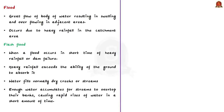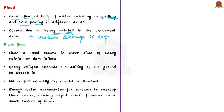A flood refers to a great flow of water which results in swelling and overflowing in adjacent areas. It generally occurs due to heavy rainfall in the catchment area, upstream discharge in a storage reservoir, or dam failure. When a flood occurs within a short time of heavy rainfall or dam failure — usually less than six hours — such a flood is called a flash flood.